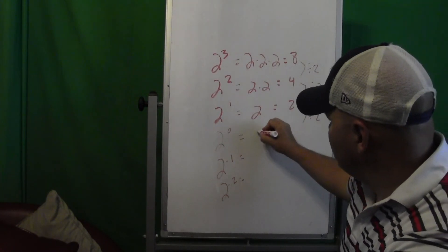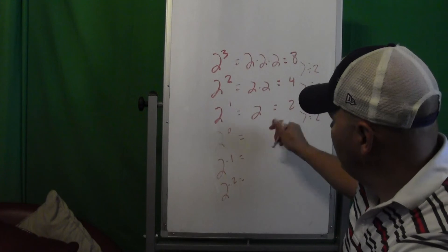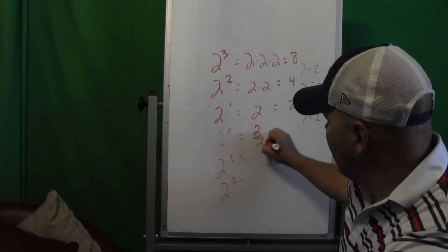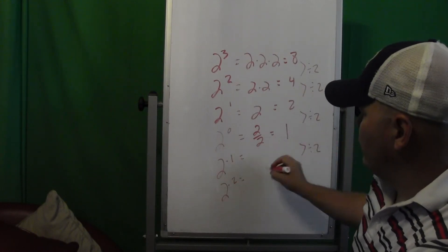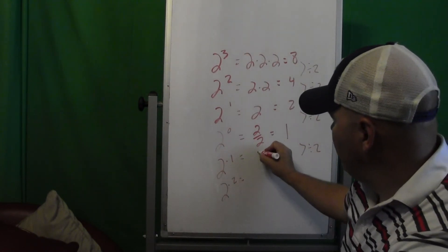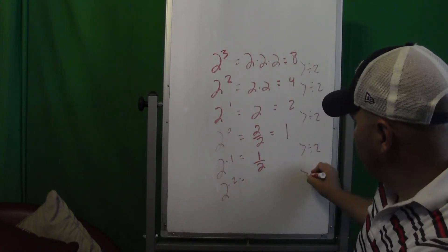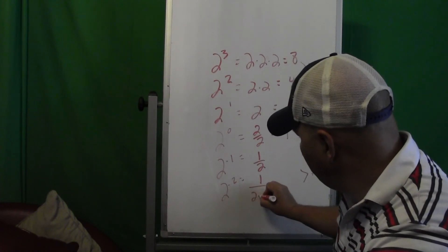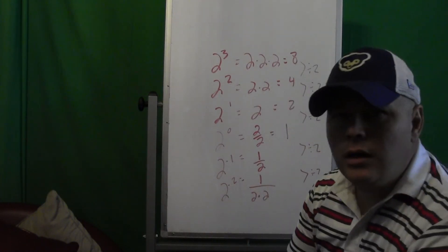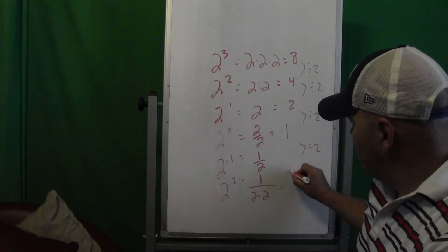So this looks like that, which is 1. For this one we're going to divide by 2 to follow my pattern and I'd have 1 over 2. For this one when I divide by 2, then it looks like this.